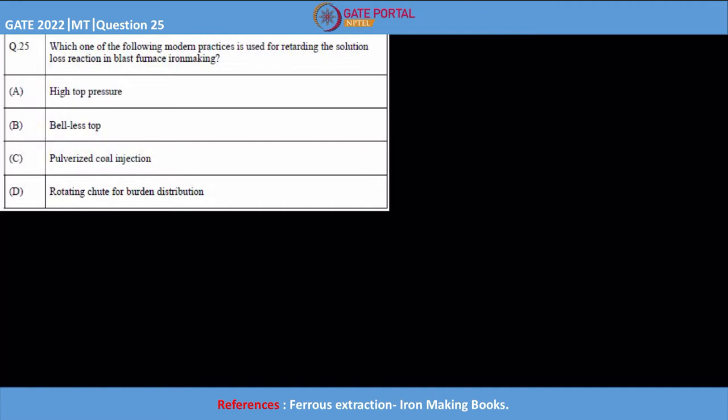Question number 25. It says which one of the following modern practices is used for retarding the solution loss reaction in blast furnace iron making. We have given four options. Before moving on to the options...